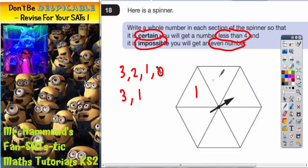So we could have one, one, three, one, one, three. Completely doesn't matter. Just double check it at the end. Is it certain you will get a number less than four if you spin that spinner? Yes it is, so that clue works, tick it.